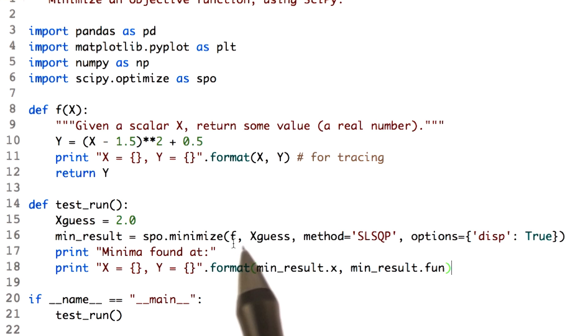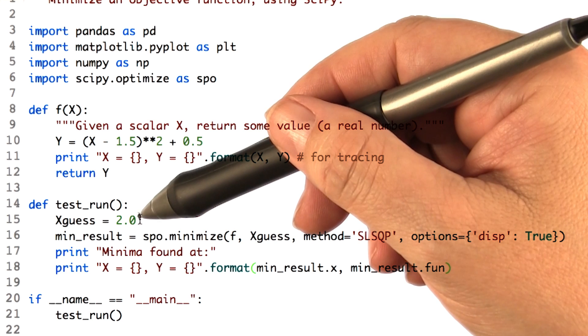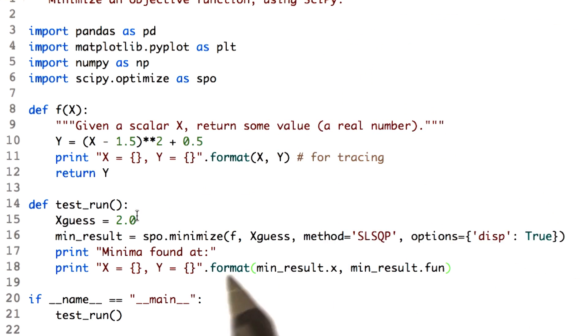This is our call now to the optimizer, or the minimizer. Before we call it, we first set our guess value to be 2.0. And we're using the function minimize, so we call SPO.minimize.